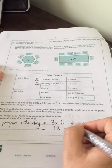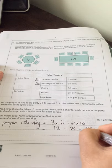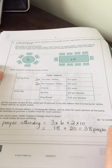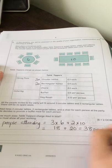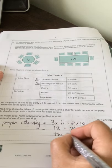three times six is eighteen. Two times ten is twenty. So in total there will be thirty-eight people attending the party.